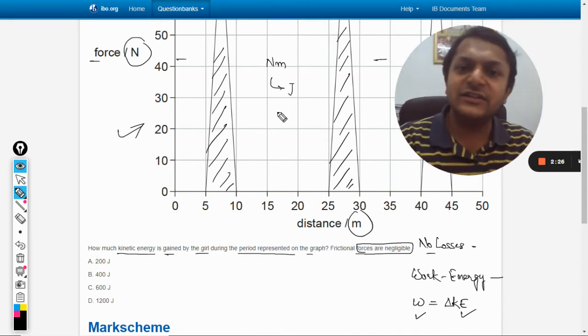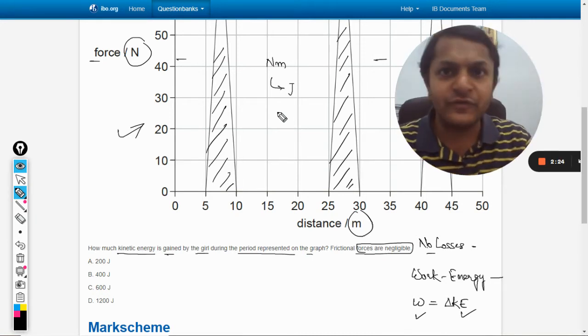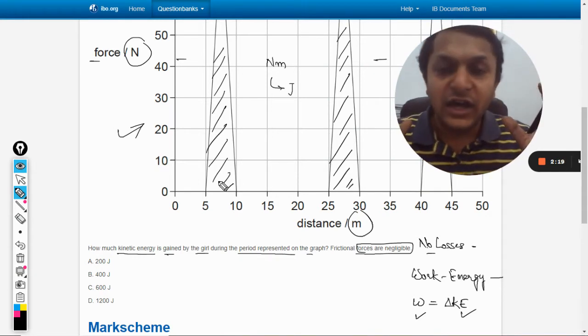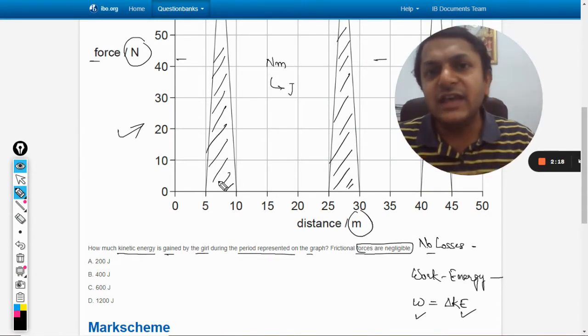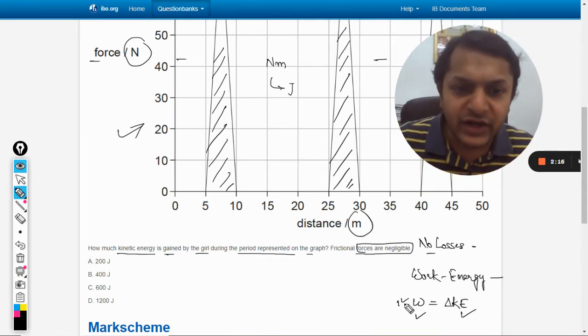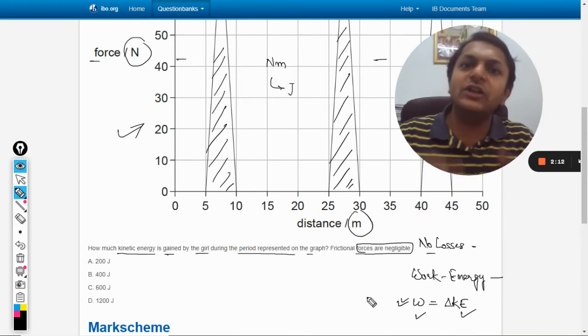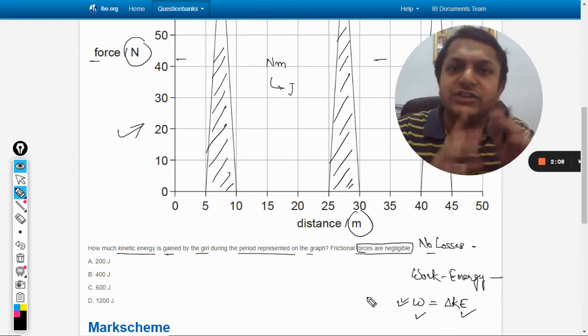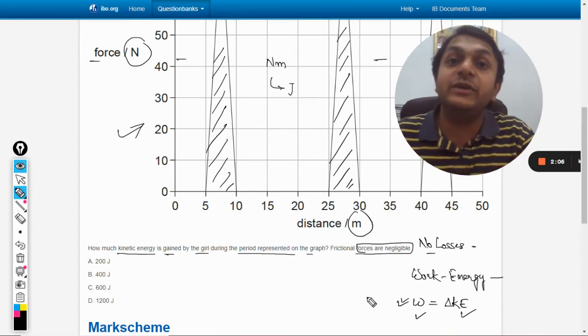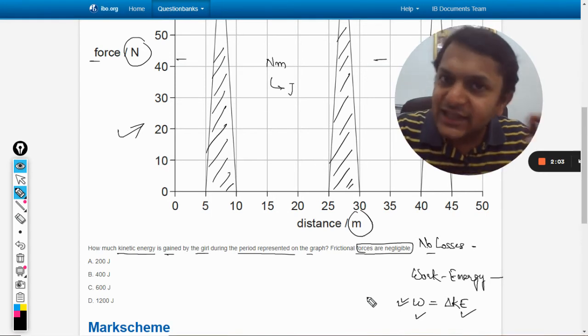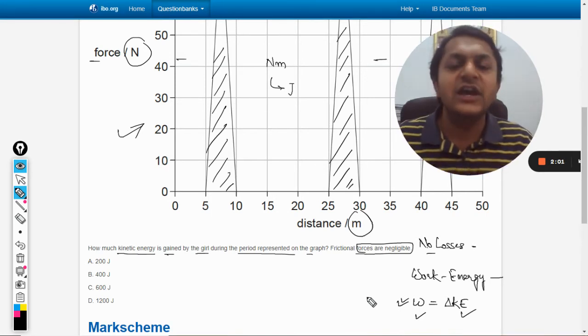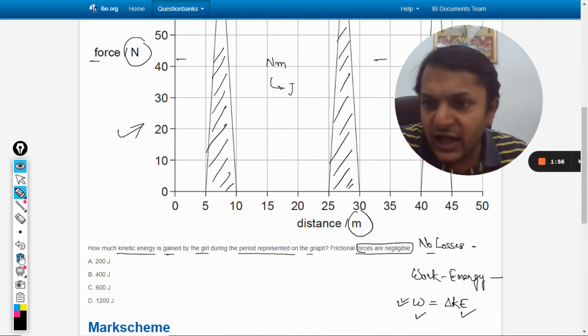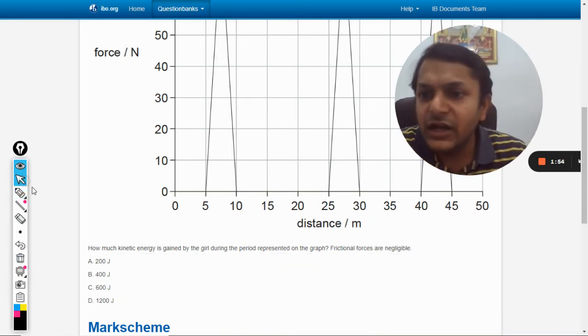Joule is concerned with either work or energy. So it means if we're able to find the total area under the curve, that will be equal to the total work done by the person. According to work-energy theorem, the total work will be converted into kinetic energy, and that's what the question asks. Let's find the area.